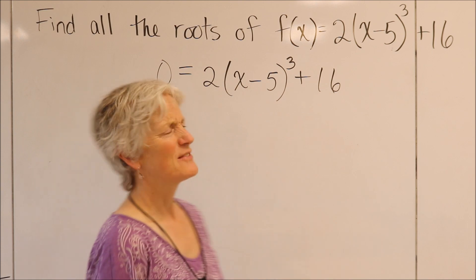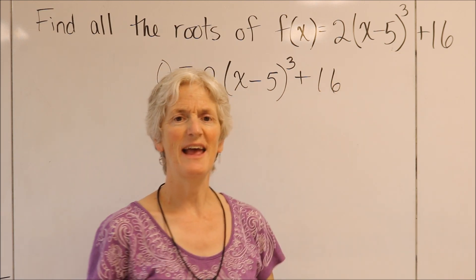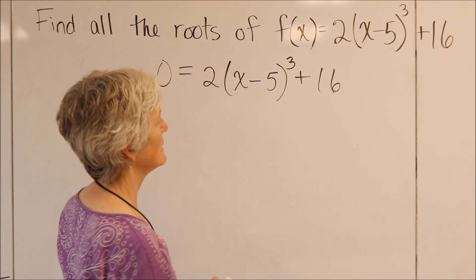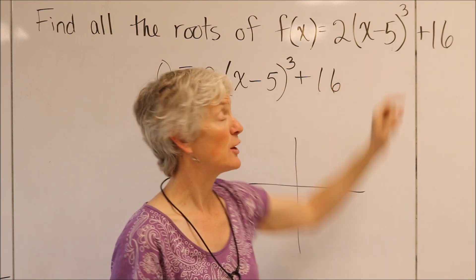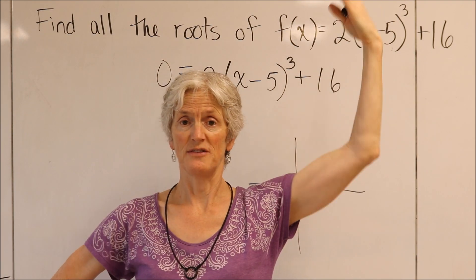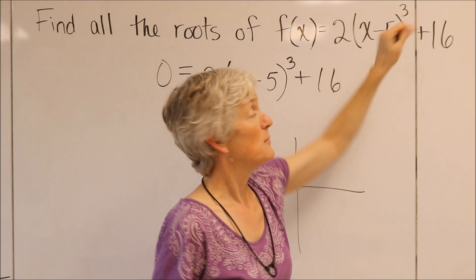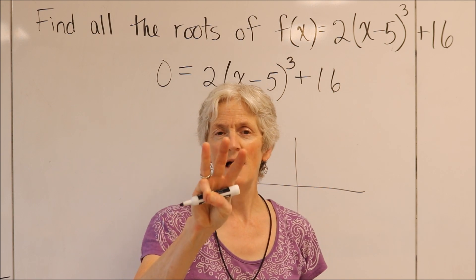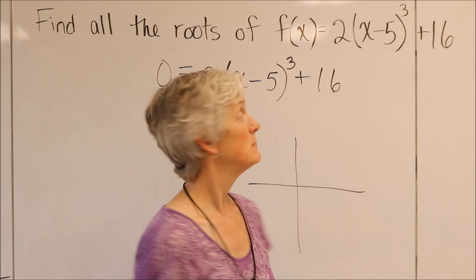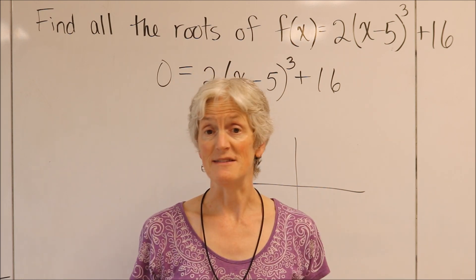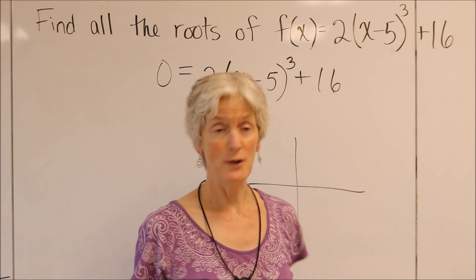Now before I start, I kind of want to get a sense of what I'm looking for. I like looking at a function and thinking about what that might look like graphically. So let's just think about f of x quickly. I know it's a cubic, and the leading coefficient is positive, so I know my end behavior is going to go like this. Fundamental theorem of calculus says this has precisely three roots. They might not all be real. They might not all be different roots, but I know that this polynomial has three roots.